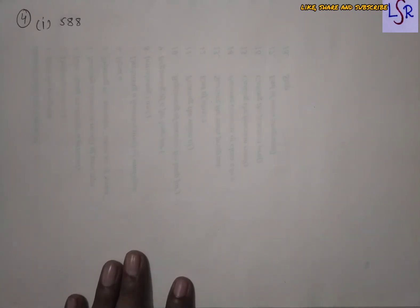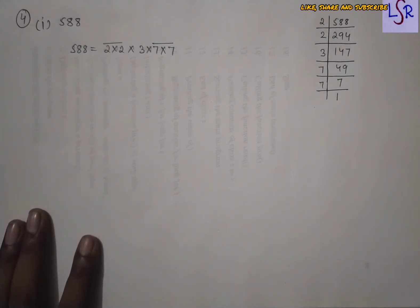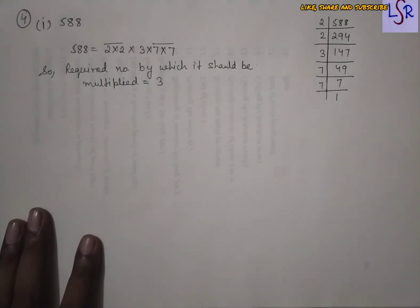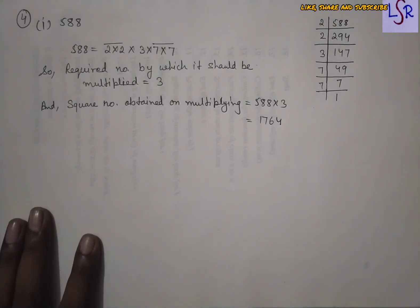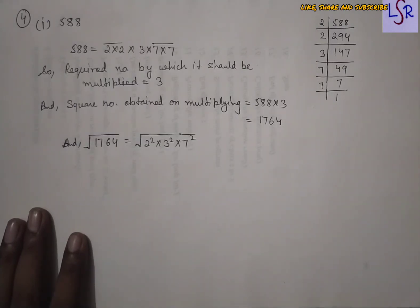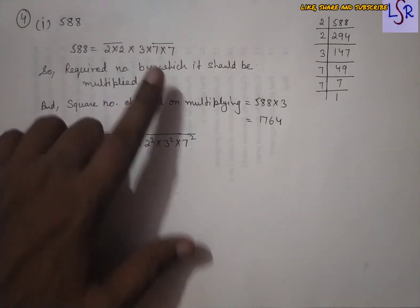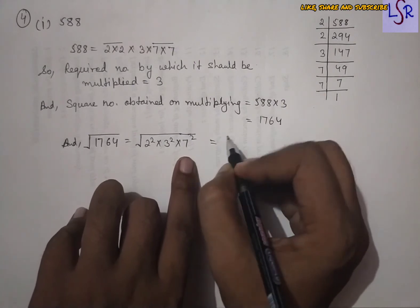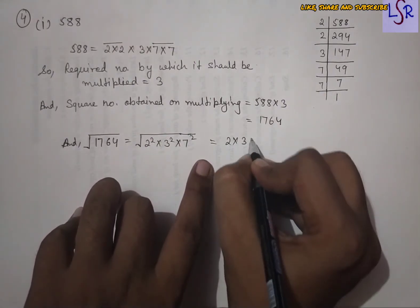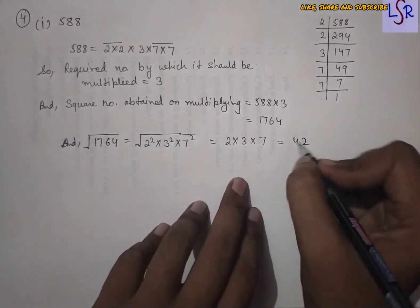In question number 4, for each number we find the smallest number by which it should be multiplied to get a perfect square, then find the square root of the result. For 588, we first find the prime factorization, write in the form of products, and after making pairs we see that 3 is left unpaired. So the required multiplier is 3. Multiplying: 588 × 3 = 1764. The square root of 1764 is √(2² × 3² × 7²) = 2 × 3 × 7 = 42.